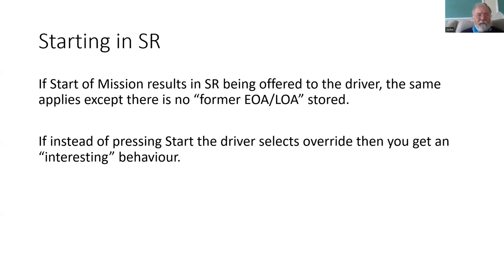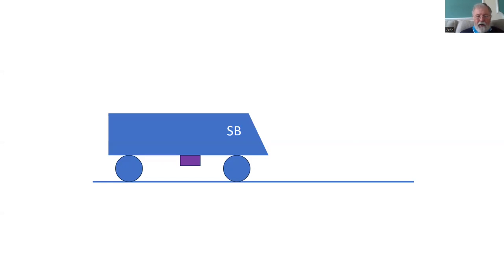If the driver knows they're not going to be able to use start in order to get a movement authority — perhaps they've been advised there is a failure of the system — then they can select override instead of pressing start, and that does lead to an interesting behaviour. Here's our train, currently sitting in standby. The driver hasn't yet pressed start. They have gone through the relevant parts of the menu, entered the train data, the driver ID, the train ID. The train knows it is in, let's say, level two or level three, but it is still in standby.